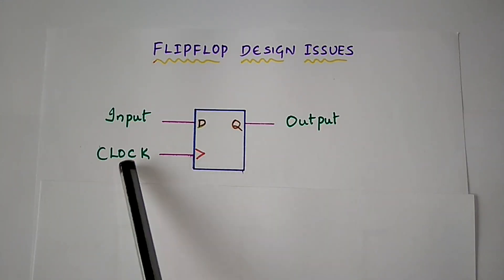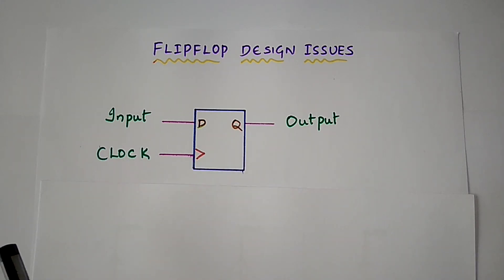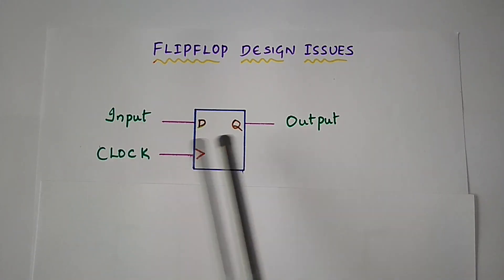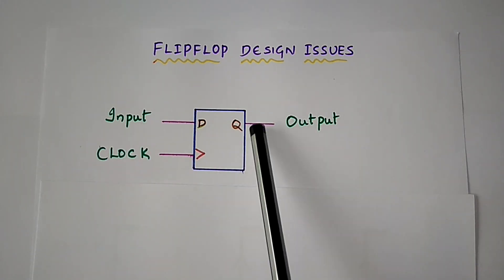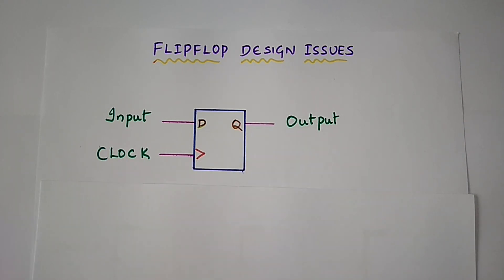Consider the flip-flop — it is a positive edge-triggered type. We give the input and get the output. For a positive edge-triggered flip-flop, the clock signal, setup time, and hold time are as follows.